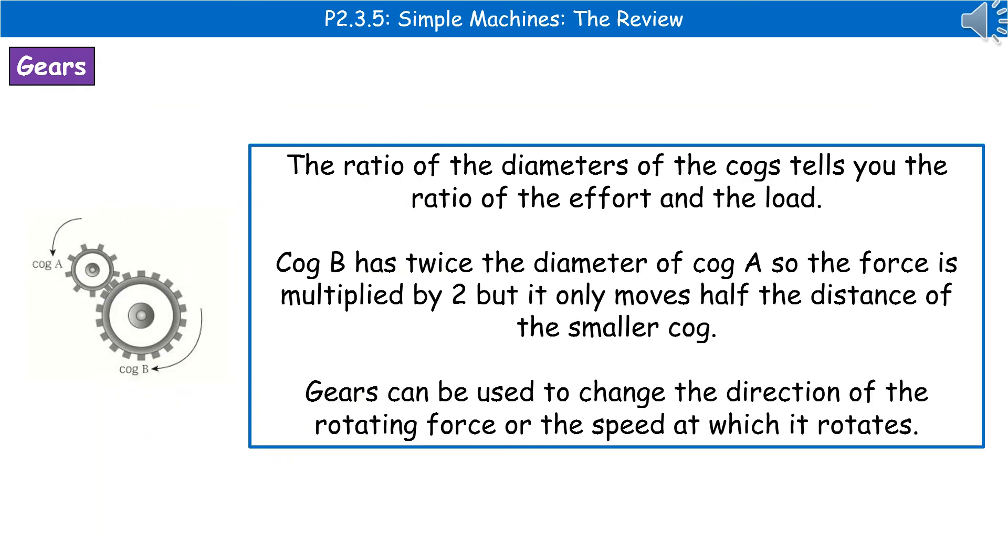The next type of machine that we could use is one that involves gears. So the ratio of the diameters of the cogs tells us the ratio of the effort and the load. So in the diagram on the left, we've got cog A and cog B. Cog B has twice the diameter of cog A. So that means that the force will be multiplied by 2, but it will only move half the distance of cog A.